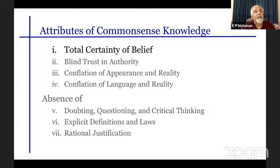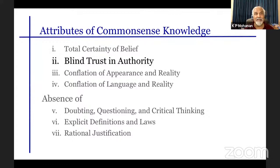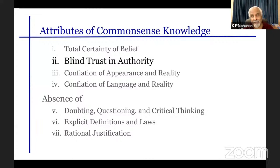To contrast the norms of academic knowledge with common sense knowledge: in common sense knowledge, there is total certainty — no uncertainty, no expectation that your knowledge could be false. Common sense knowledge also typically exhibits blind trust in authority. This is maximally true in religious knowledge based on religious texts, and also in what we call dogma — blind trust in authority or in some proposition. This is widespread outside academia, and also in some fields still taught as academic knowledge.